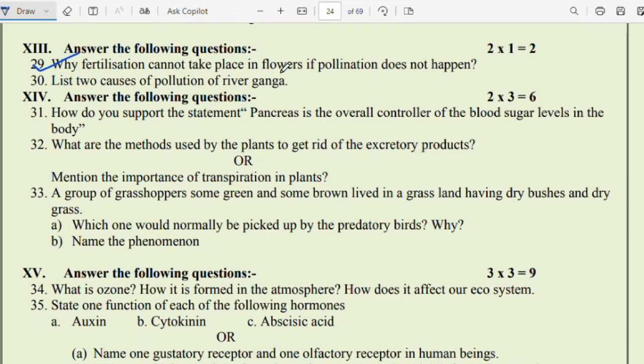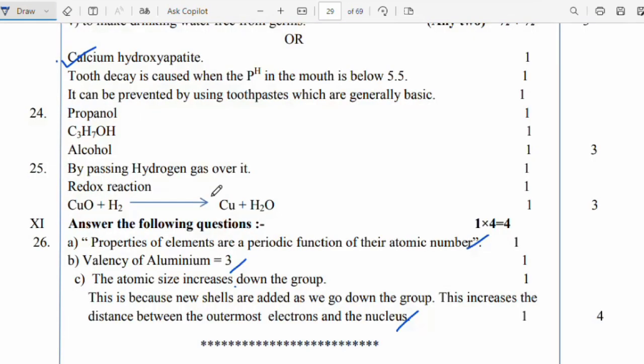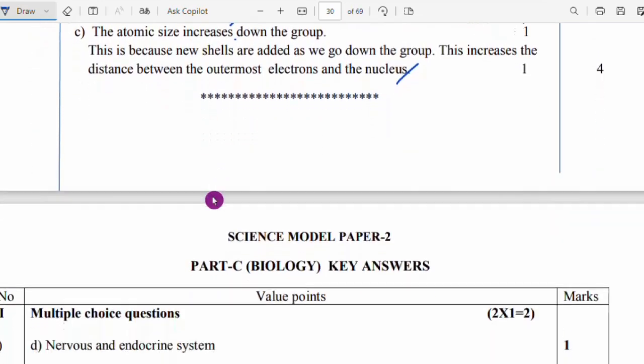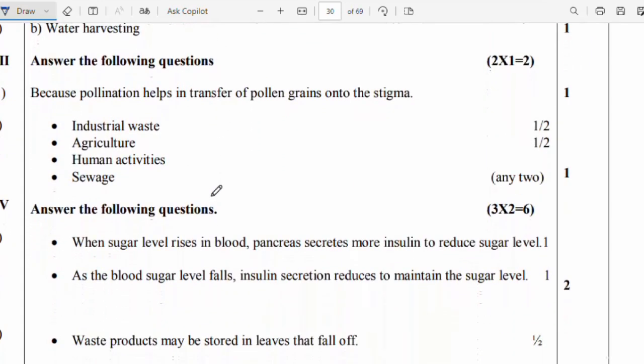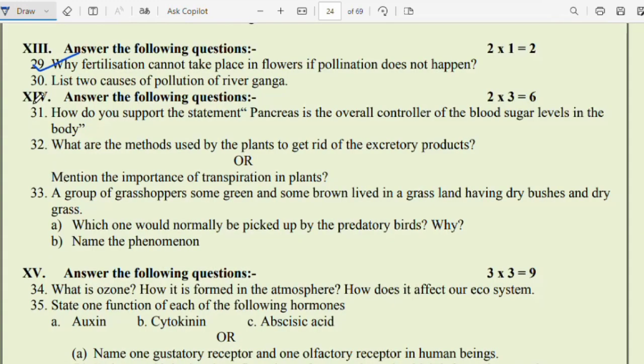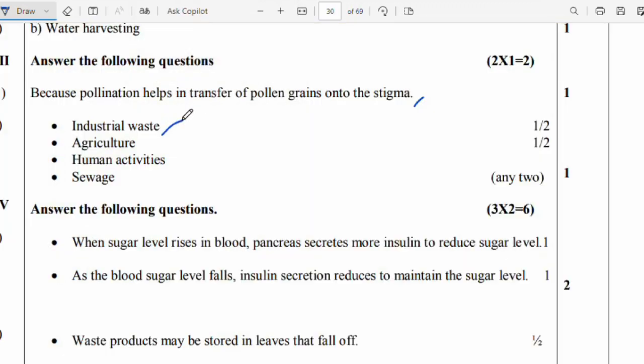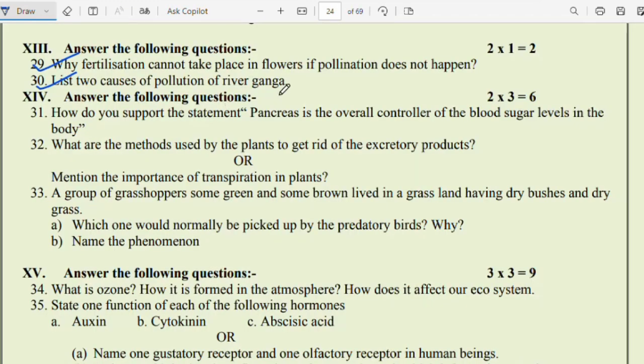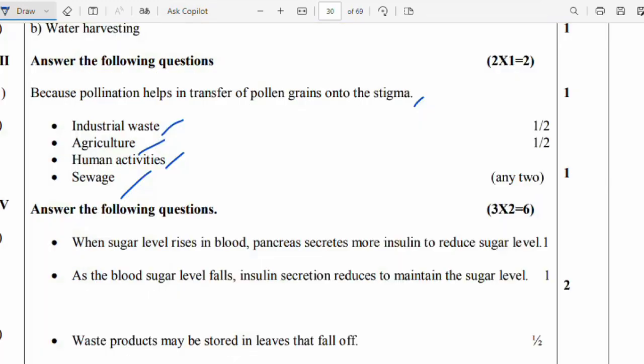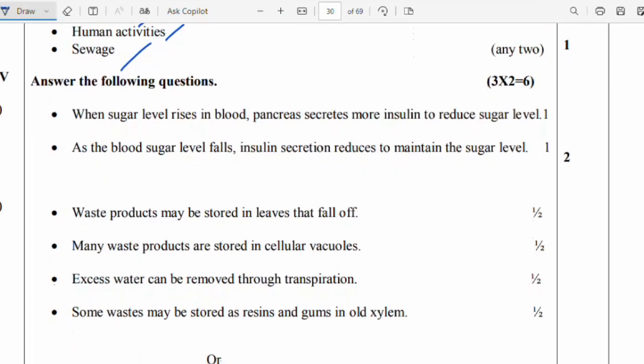Question 29: Why fertilization cannot take place in a flower if pollination does not happen? Because pollination helps in the transfer of pollen grain onto stigma. Question 30: List the causes of pollution of river Ganga. Industrial waste, agriculture, human activity and sewage. Because of that, river Ganga is polluted. Question 31: How do you support the statement 'Pancreas is the overall controller of the blood sugar level in the body'? For that answer is this. I am going to display the answer children.